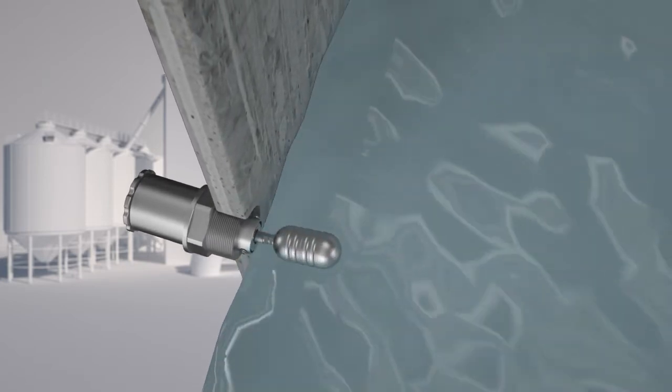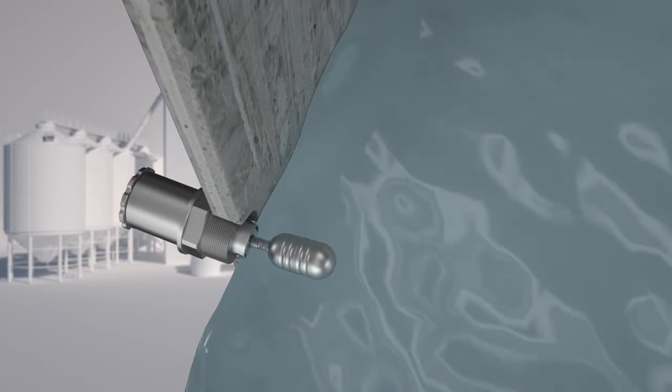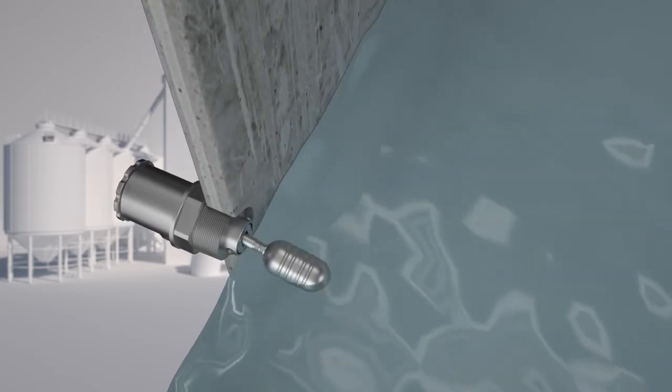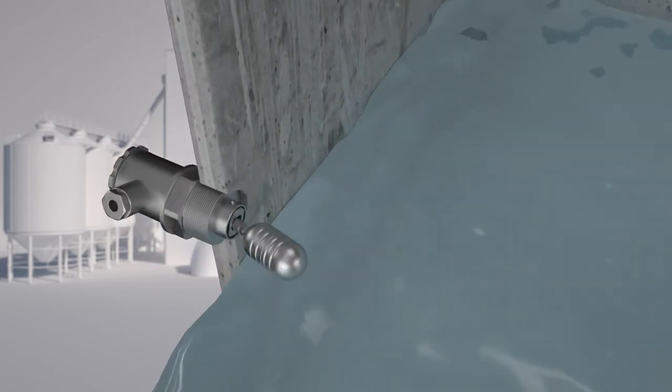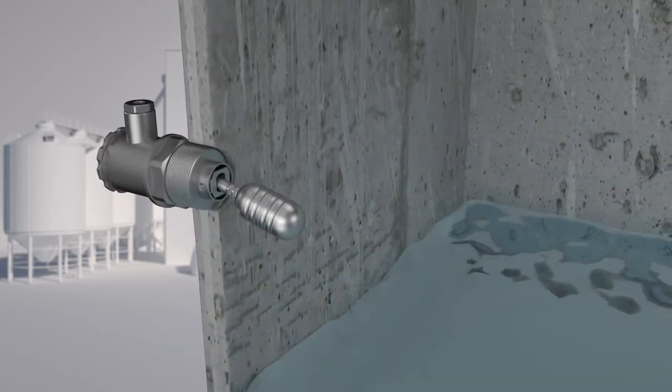When the liquid level is higher than a certain position, the float is affected by buoyancy. In turn, the switch in the junction box can be switched to NC contact.